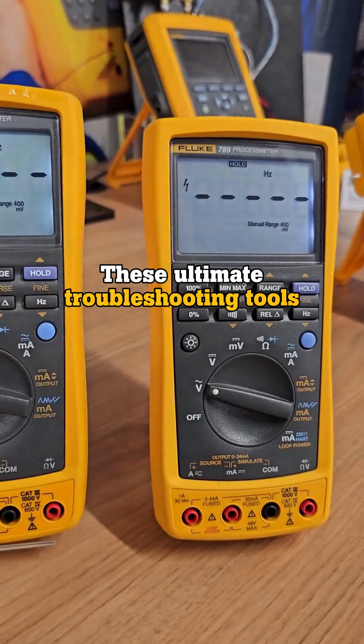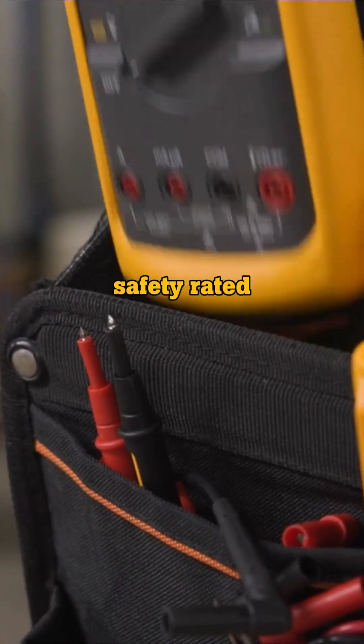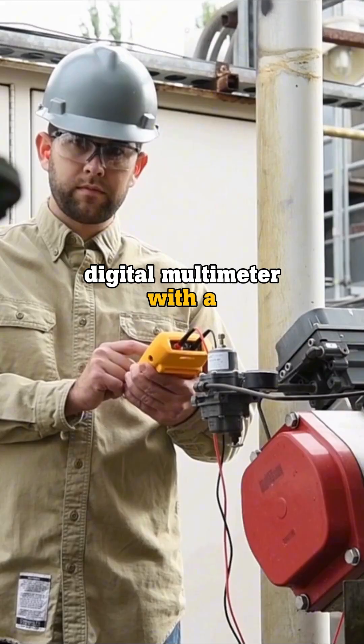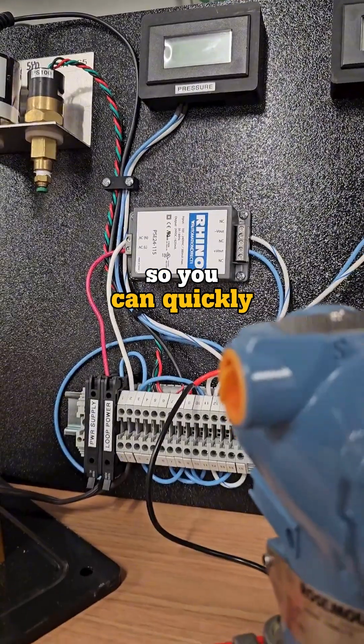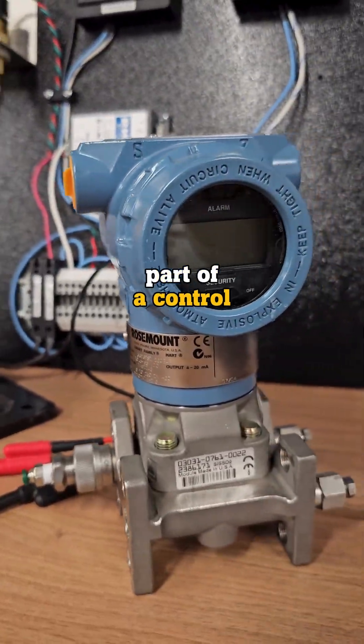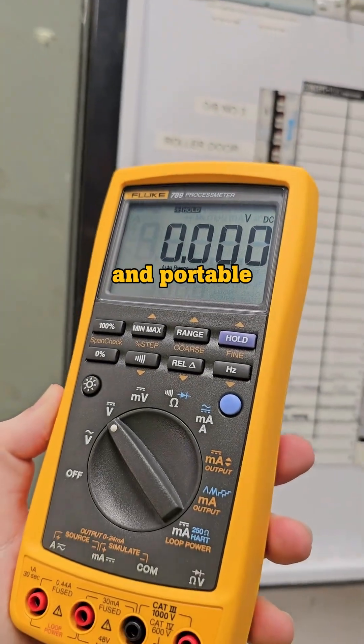These ultimate troubleshooting tools combine a full-featured, safety-rated digital multimeter with a milliamp loop calibrator, so you can quickly and easily troubleshoot every part of a control loop with a single compact and portable tool.